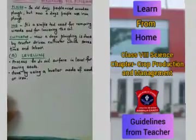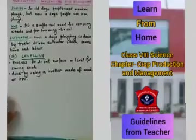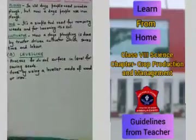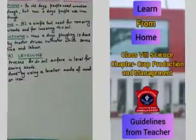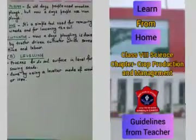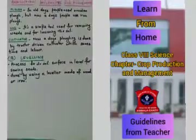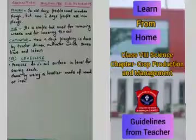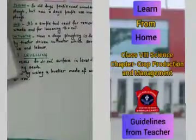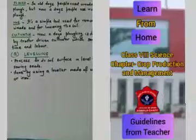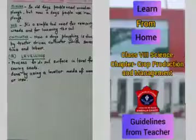The next step is leveling. It is the process to even the soil surface and level it for sowing of seeds, which is the next step in agricultural practices. We need to level the soil and it is done using a leveler made of wood or iron. That's all for today, children. I will be coming up with the rest of the agricultural practices in my next video. Thank you.